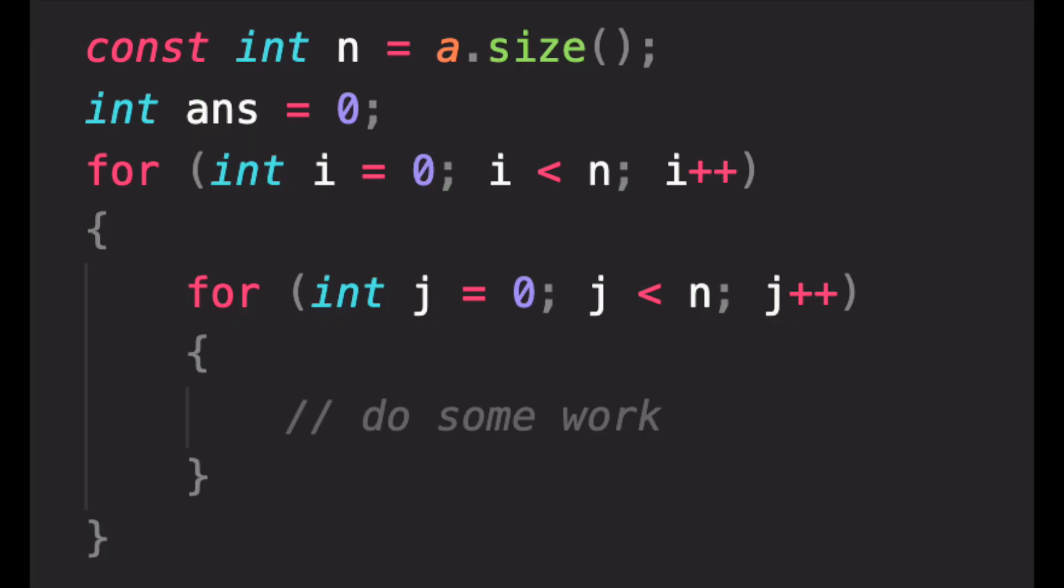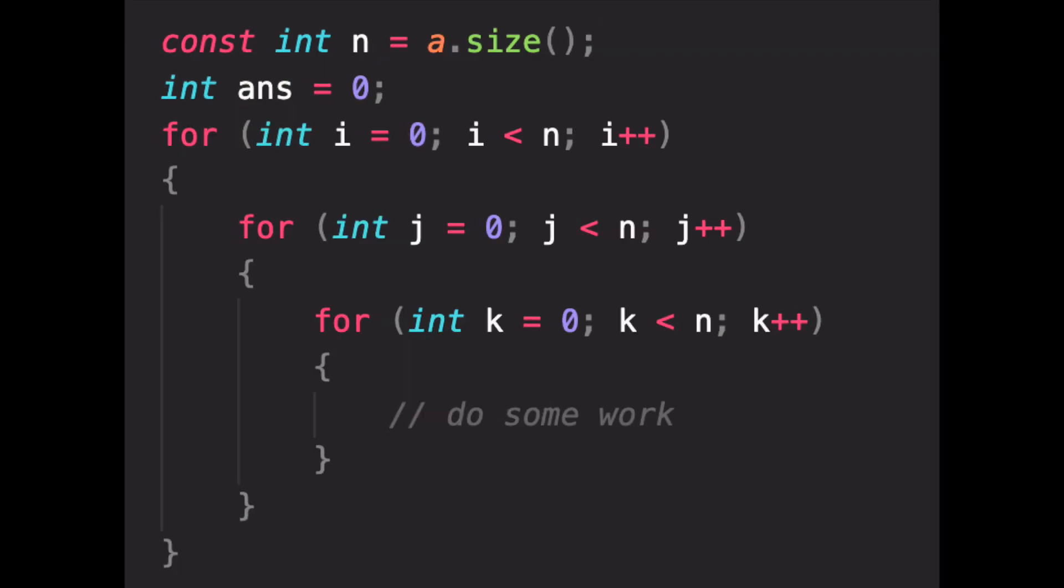So for this code, we have n square, as we already discussed due to n times n operations. Similarly, for this, we have n times n times n, so n cube.